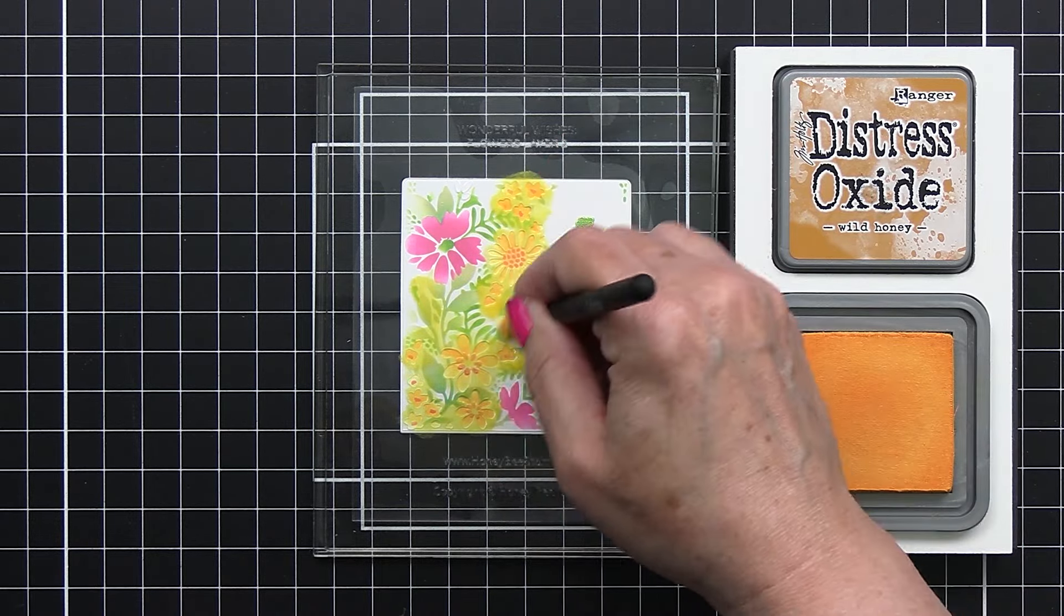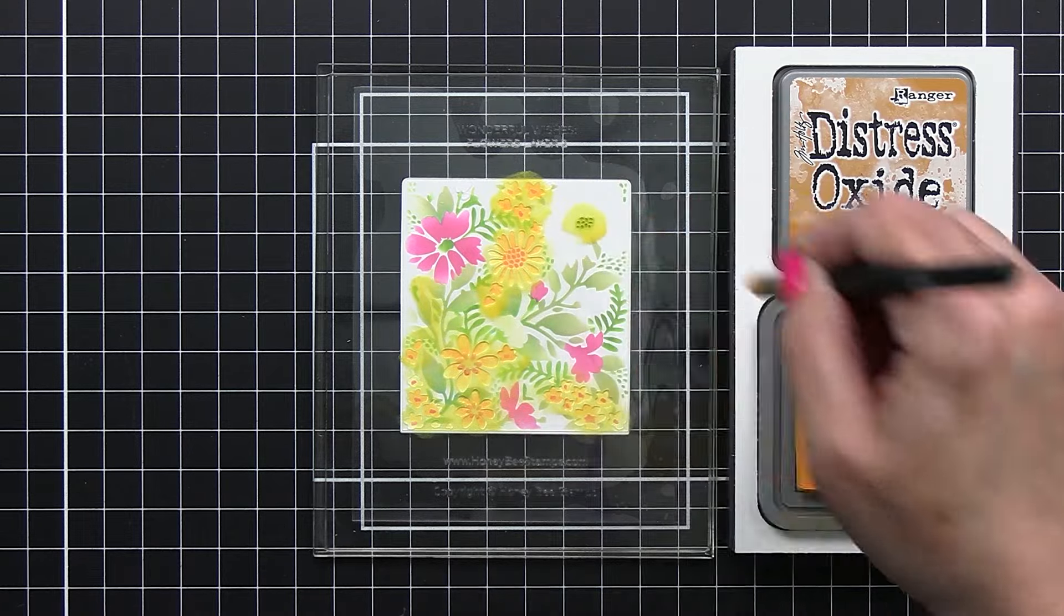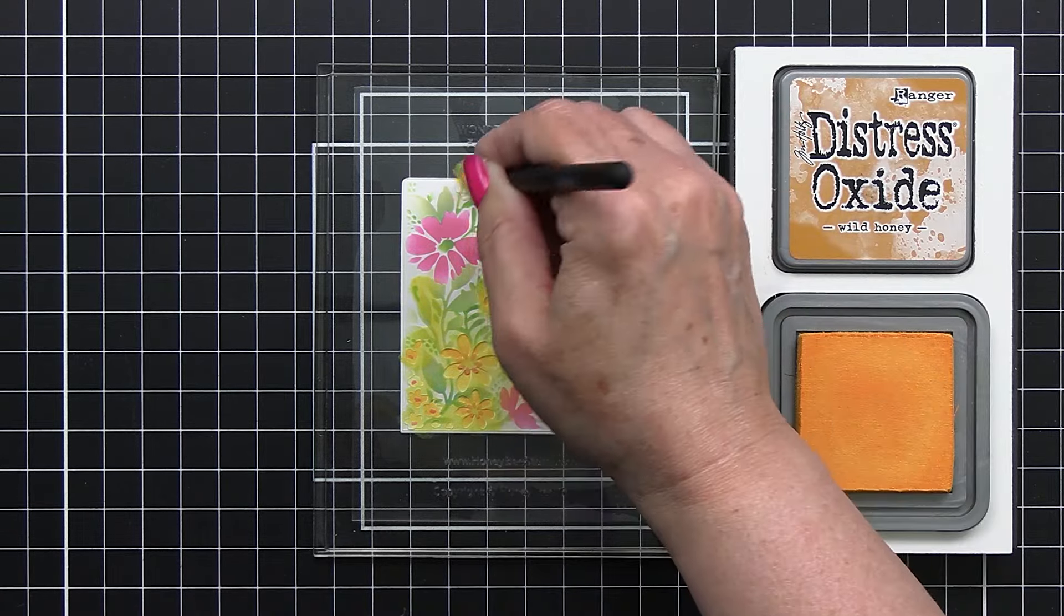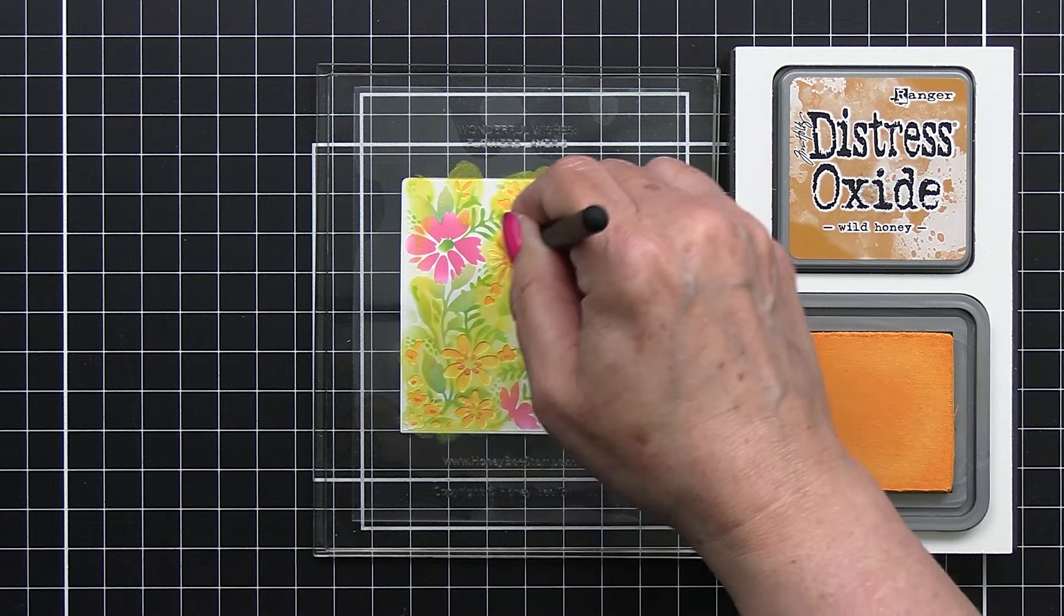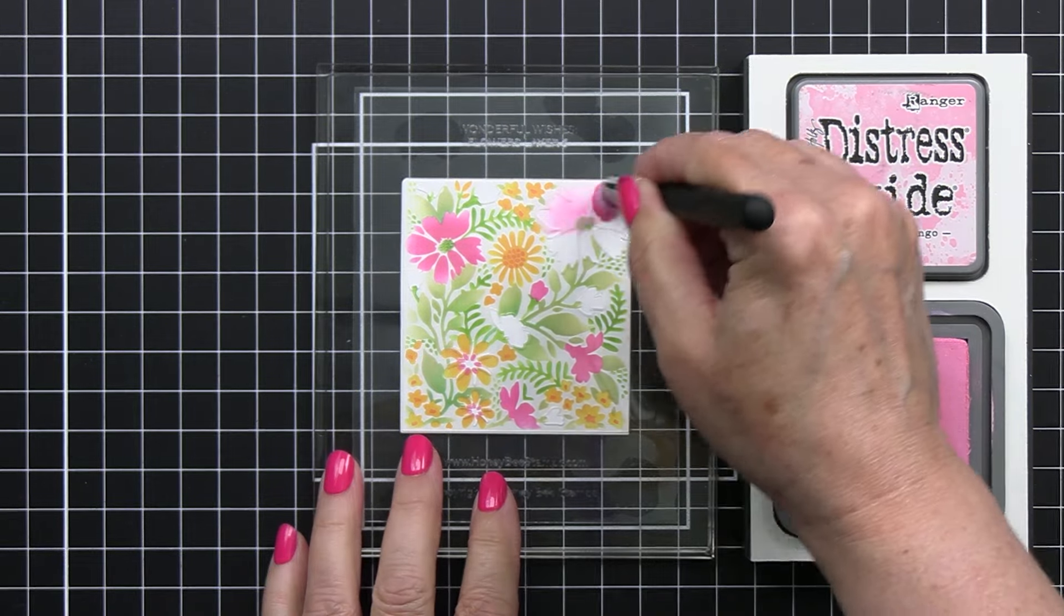You can see how this is slowly but surely filling in all of the different areas on that white cardstock. It's a really great way to colorize your different areas on this really adorable little stencil set.